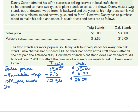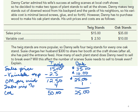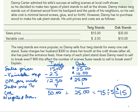The twig stands were more popular. Looking at the sales mix percentage, they're going to sell four twig stands to every one oak stand. The contribution margin from twig stands is $12.50 times 4, which equals $50. The weighted average contribution margin is found by adding both together — that's $75 — divided by the total number of units, which is 5. So our weighted average contribution margin is $75 divided by 5, or $15 per unit.